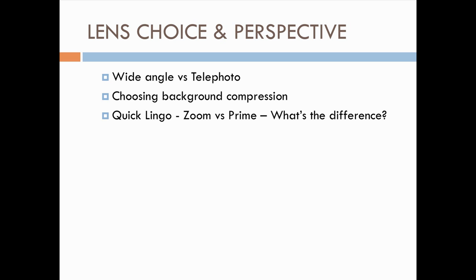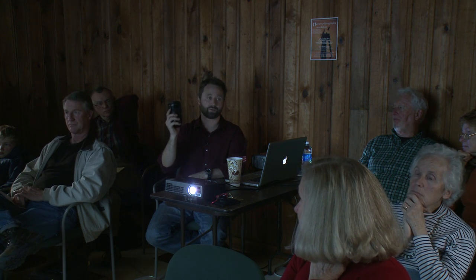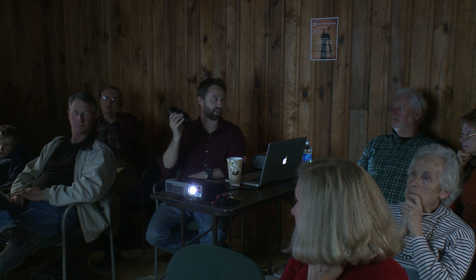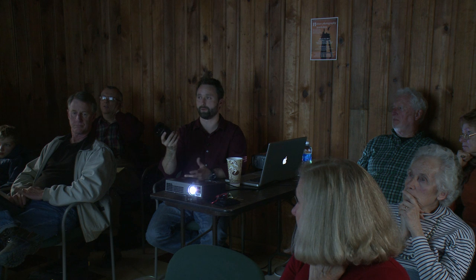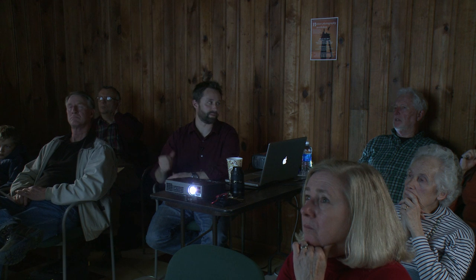Quick lingo: a zoom lens versus a prime lens. A prime lens is a fixed focal length lens with no zoom. The biggest differences are that prime lenses are typically sharper than a zoom at the same focal distance, and they usually have the ability to shoot at a bigger aperture — a lower f-stop. For example, you can buy a 24mm f/1.4 lens, but you can't get that aperture in a zoom.